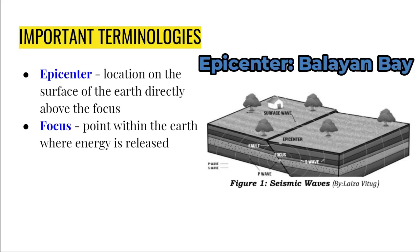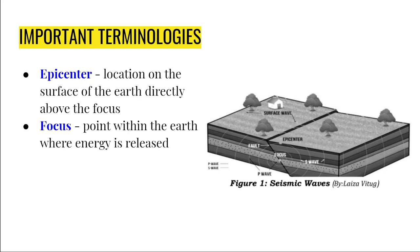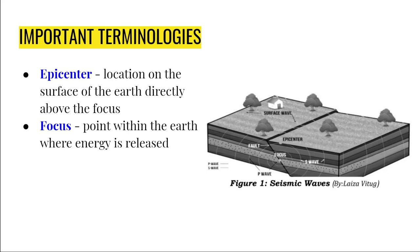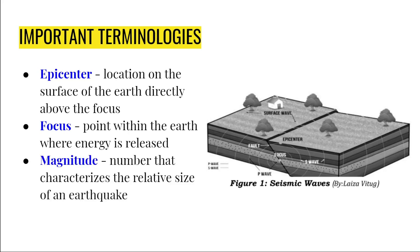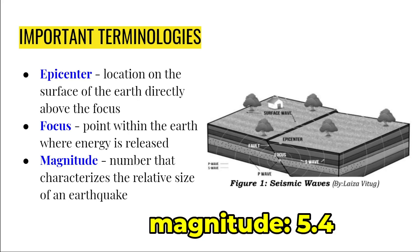Using the diagram, the epicenter — which is Balayan City in Batangas — is found on the surface of the Earth. That's why the epicenter is usually characterized by a place. The focus is the point directly below the epicenter, and it is the origin of all the energy felt on the surface. Regarding magnitude: it is the number that characterizes the relative size of an earthquake — the higher the number, the stronger the earthquake. The earthquake in the article was 5.4, characterized as moderate, but it can already be felt by humans.